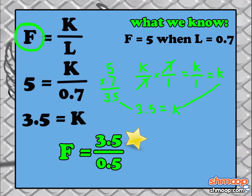So plugging this new value into our formula, we get F equals 3.5 divided by 0.5, giving us the frequency F of a 0.5 inch long chest hair. So the answer is 7 hertz.